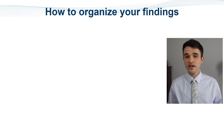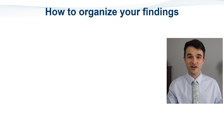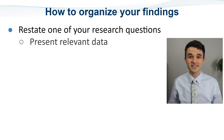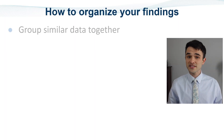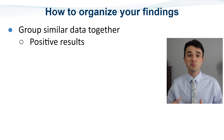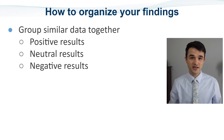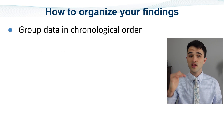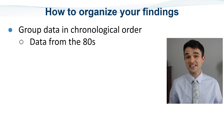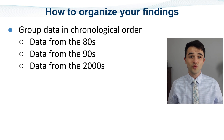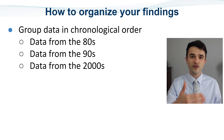How to organize your findings. Here are some organization tips to help you clearly present your findings. Restate one of your research questions, then present the data that addresses that research question. Do this for all of your research questions. You can group similar data together — for example, start with the positive results, then the neutral results, then the negative results. You can also group data into chronological order — for example, start with data from the 1980s, then the 90s, then the 2000s. Presenting your findings in one of these ways will help your reader follow your narrative.